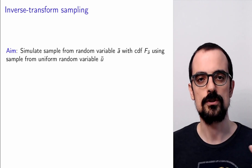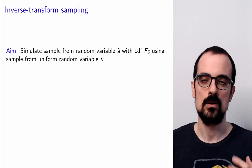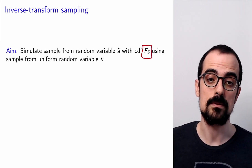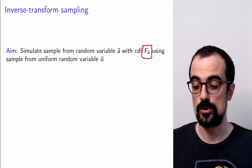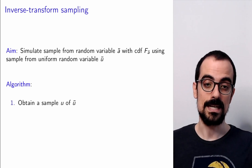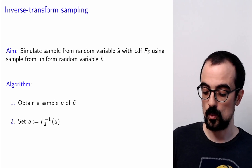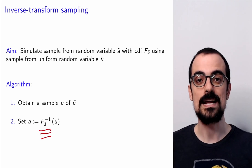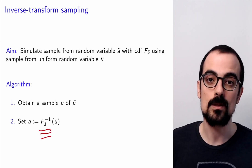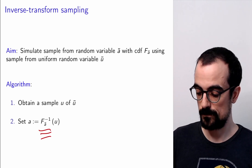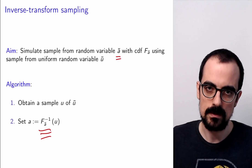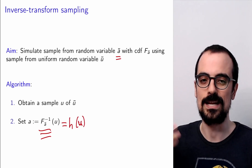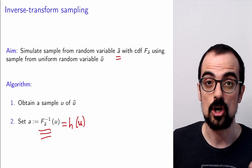Let's recap. We've shown that if you want to simulate a sample from a random variable A with known CDF, and you have a sample from a uniform random variable U, you apply the inverse CDF of A to U. That mapping ensures the probability of ending up in any interval equals P(A ∈ that interval). The mystery function h depends on A precisely through the inverse of A's CDF.